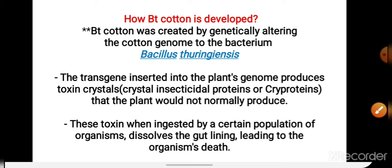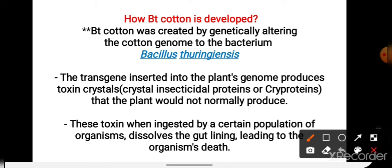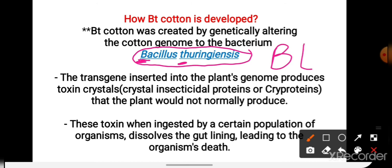अब सवाल ये है कि इसे BT cotton ही क्यों कहते हैं? यहाँ पे देखिए, ये है bacteria जिससे genes निकाले थे. तो ये जो bacteria का नाम है, उसका पहला शब्द है B, और जो दूसरा है T, तो इस वजह से इसे BT cotton कहा जाता है.